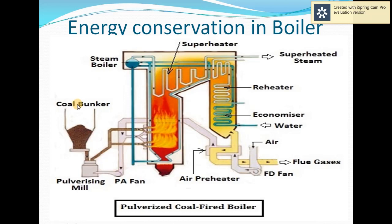First, we will see the coal cycle. Coal is stored in the bunker. From the bunker, coal is supplied to the coal mill. The coal mill produces pulverized coal — its function is to produce powdered coal. With the help of PA fan pressure, this powdered coal is sprayed inside the boiler for combustion.